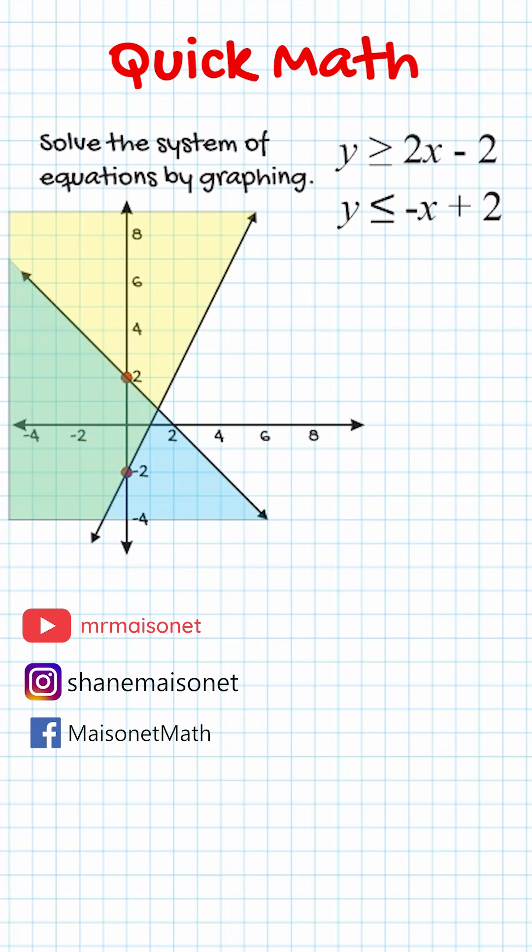So everything that's shaded in yellow represents points that would work for our first inequality, and everything in blue represents a region of points that would work for the second inequality.